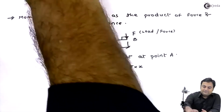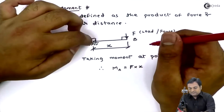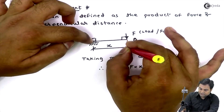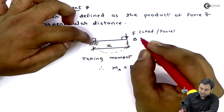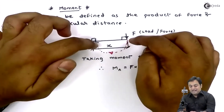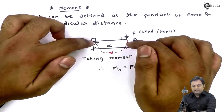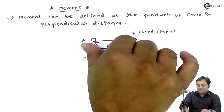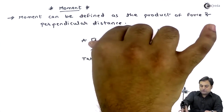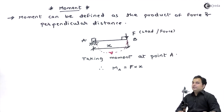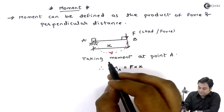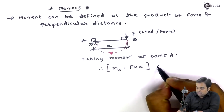Since point A is fixed, because of this moment there will be a rotation in the clockwise direction. When I apply force at point B with point A fixed, the force will try to move point B along its direction. The rod or lever will try to move in the direction of the force, which in this case is the clockwise direction. So the moment produced here would be called a clockwise moment.